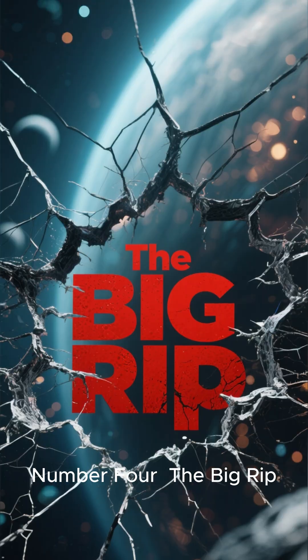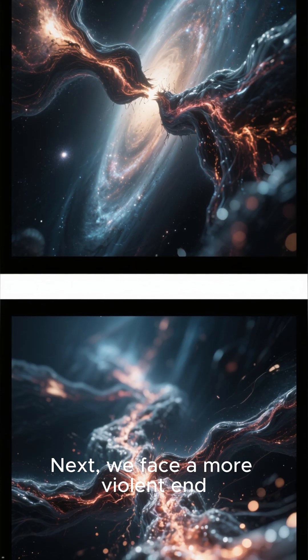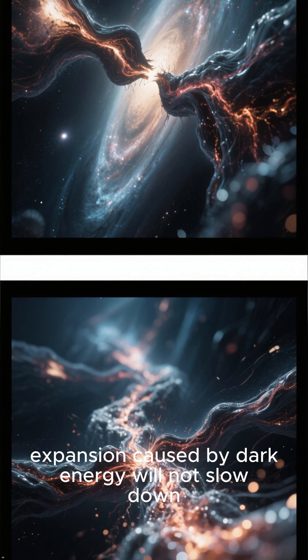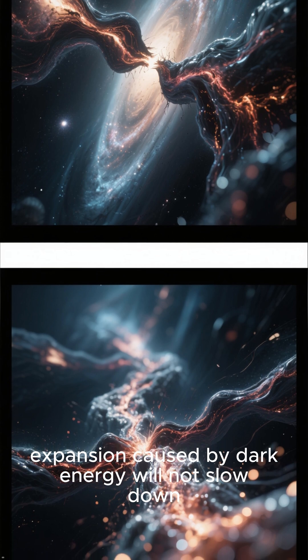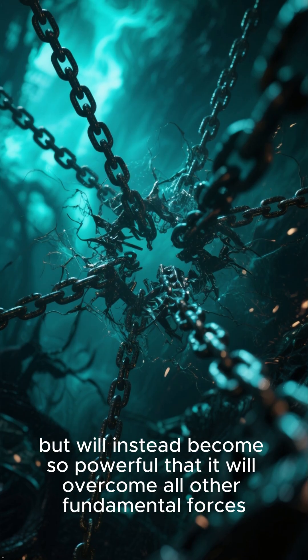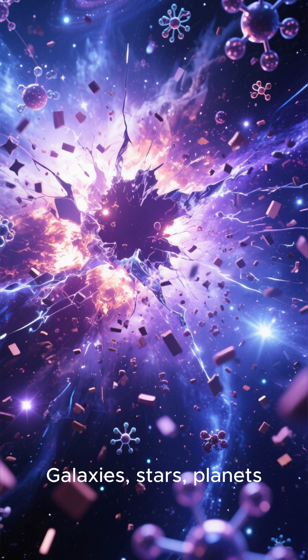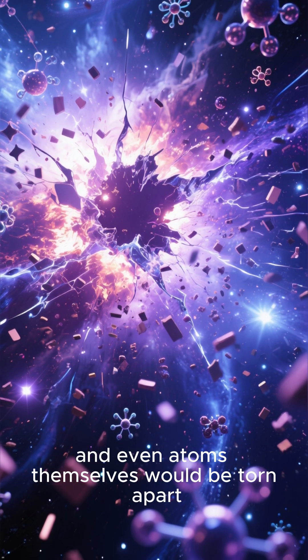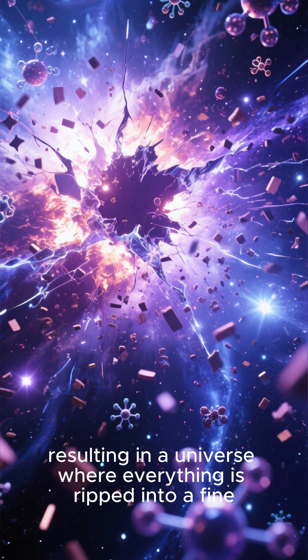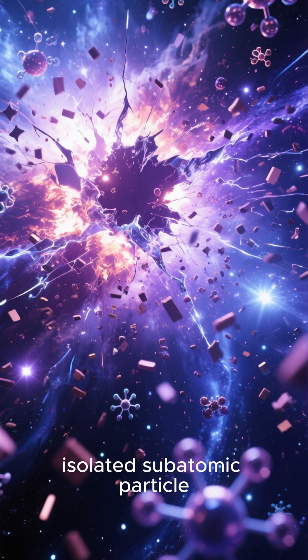Number 4: The Big Rip. Next, we face a more violent end. The Big Rip theory posits that the accelerated expansion caused by dark energy will not slow down, but will instead become so powerful that it will overcome all other fundamental forces. Galaxies, stars, planets, and even atoms themselves would be torn apart, resulting in a universe where everything is ripped into fine, isolated subatomic particles.